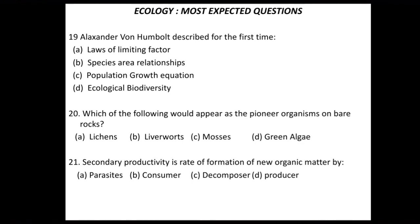Question 20: which of the following would appear as pioneer organisms on bare rock? This question is from the succession part. Succession on bare rock always begins with lichens — specifically crustose lichens, which commonly grow on bare rock. So the direct answer is lichens. Liverworts, mosses, and green algae are not the pioneer species; lichens are the pioneer community.